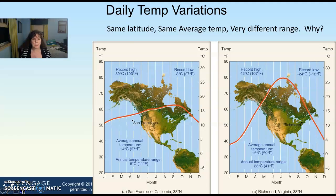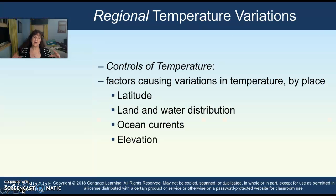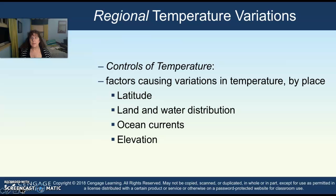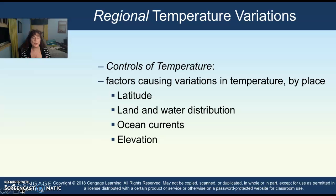Why is this? These cities are not that much different. They're along the same latitude and have the same average temperature — why is their range so different? You can have controls of temperature that are factors conveying regional differences. The factors generally are latitude, land and water distribution around the area, ocean currents, and elevation.